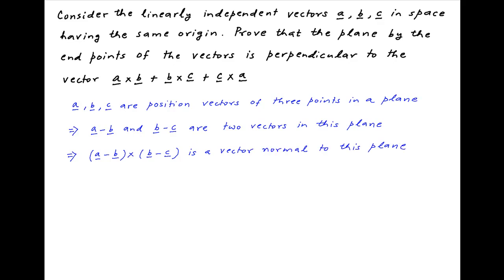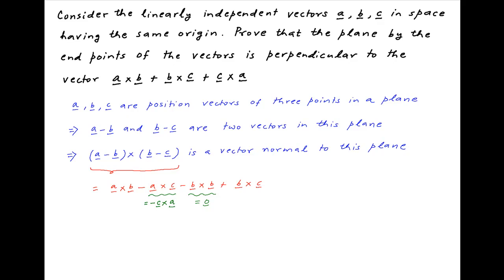Now, the cross product A-B cross B-C is equal to A cross B minus A cross C minus B cross B plus B cross C. Note that B cross B is equal to the null vector and A cross C is equal to minus of C cross A.